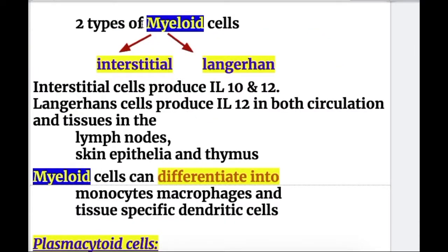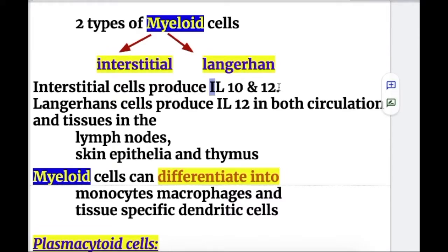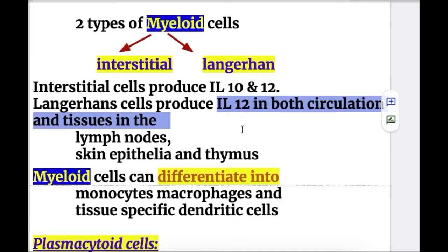The myeloid type of dendritic cells has two subtypes: interstitial and Langerhans. Interstitial cells produce interleukin-10 and interleukin-12, and Langerhans cells also produce interleukin-12. Both are found in circulation, tissues, lymph nodes, skin epithelia, and thymus.